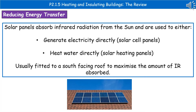The last technique is using solar panels. Solar panels absorb infrared radiation from the sun and are used in one of two ways: solar cell panels, which generate electricity directly from the sun, or solar heating panels, which heat water directly using infrared radiation. To maximize the amount of infrared absorbed, they are usually fitted on a south-facing roof to capture more sunlight.